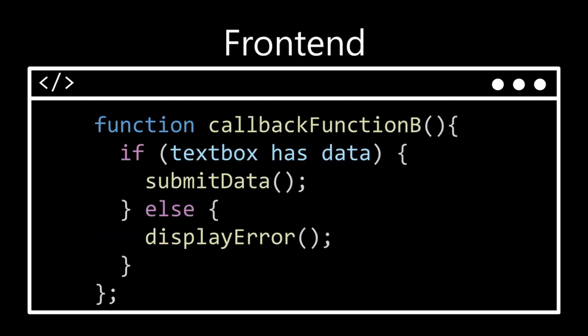The same callback function could perform different actions depending on the current state of data. For example, function B may make an API call if some text is provided in the text box when a user clicks the button. If the user has not typed anything in the text box, function B may cause an error message to be displayed instead. It is your responsibility to create these callback functions and register them appropriately to different UI elements to create a useful and meaningful front-end.